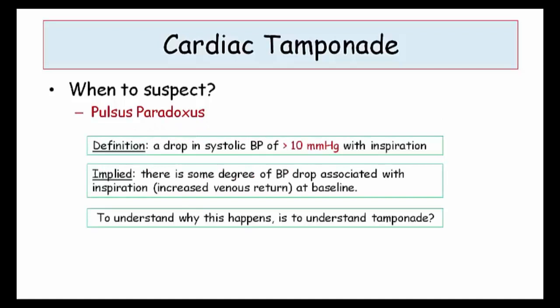So let's come back to pulsus paradoxus. This really is the key feature of tamponade, and an understanding of why it occurs underscores the pathophysiologic basis of cardiac tamponade. Pulsus is defined by a drop in systolic blood pressure of greater than 10 millimeters of mercury with inspiration. That implies we all have some degree of pulsus paradoxus — that is, a drop in our blood pressure with inspiration. Under normal circumstances, inspiration causes a drop in intrathoracic pressure with an increase in venous return to our right heart chambers.